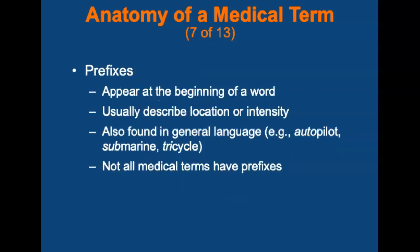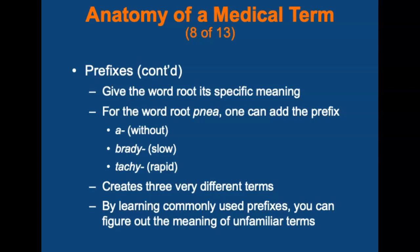A prefix is the part of a term that appears at the beginning of the word. Prefixes usually describe location or intensity. Prefixes are found in general language, such as 'autopilot,' 'submarine,' or 'tricycle,' as well as in medical and scientific terminology. Not all medical terms have prefixes, though. A prefix gives the word root its specific meaning. For the word root '-pnea,' one can add the prefix 'a-' meaning without, 'brady-' meaning slow, or 'tachy-' meaning rapid, to create three different terms. By learning commonly used medical prefixes, you can figure out the meaning of terms that may not be immediately familiar to you.